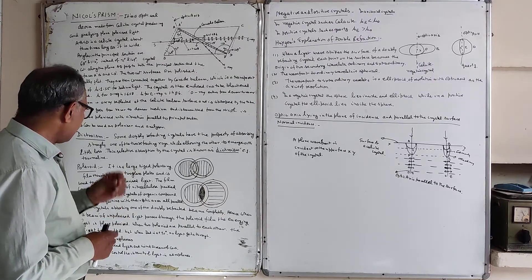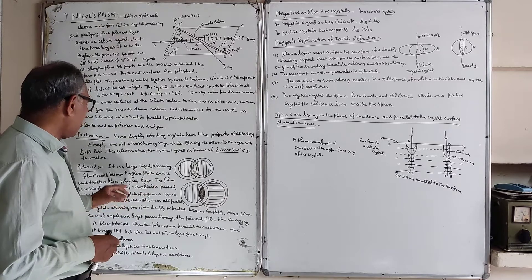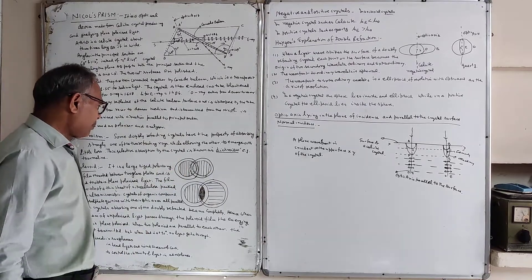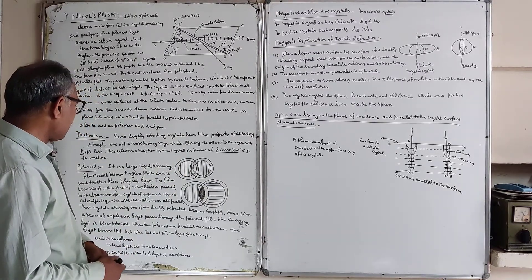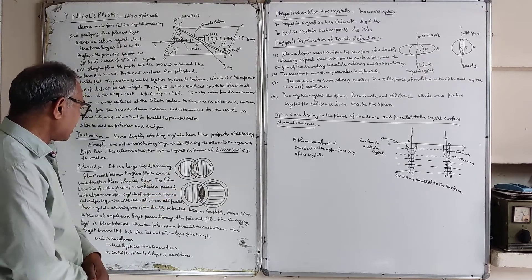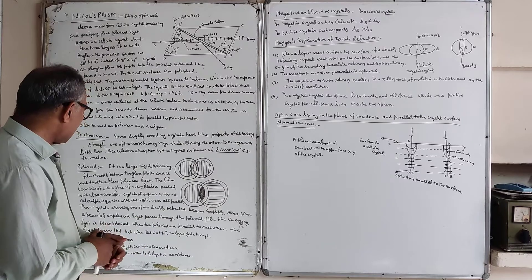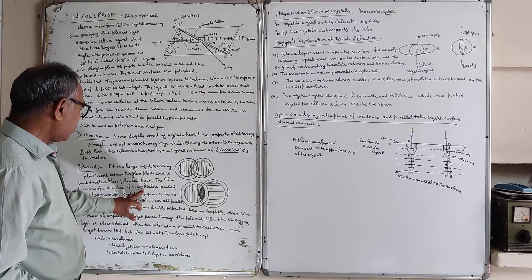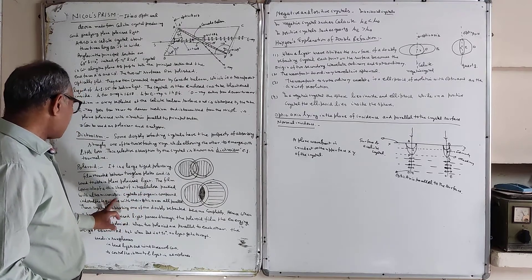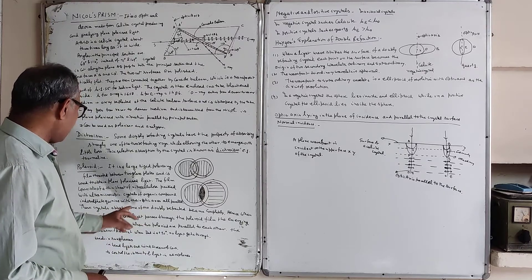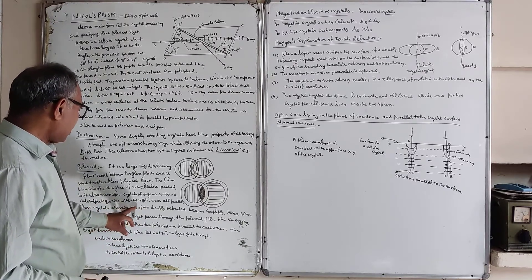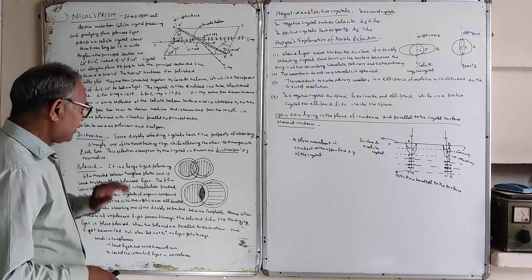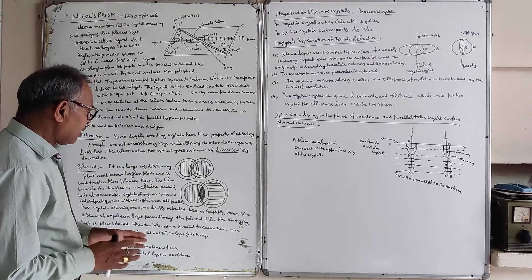Now we come to the Polaroid. A Polaroid is a large-sized polarizing film mounted between two glass plates, used to obtain plane polarized light. The film consists of a thin sheet of nitrocellulose packed with ultra-microscopic crystals of an organic compound. These crystals absorb one of the two doubly refracted beams.